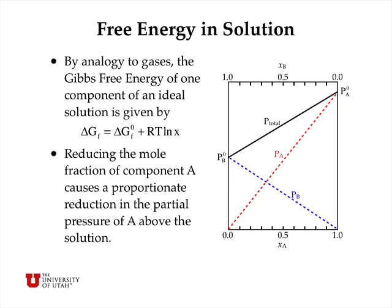Let's take a look at a graph of this behavior. By analogy to gases, the Gibbs free energy of one component of an ideal solution is given by: delta G of formation equals delta G° of formation — that would be under standard conditions, which is the pure liquid or mole fraction of one — plus a correction term RT·ln(X), where X is the mole fraction of that component. So reducing the mole fraction of component A causes a proportionate reduction in the partial pressure of A above the solution, going from the normal vapor pressure of A at Xa equals one down to zero at Xa equals zero.